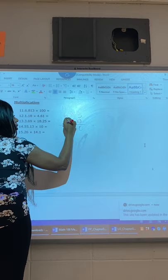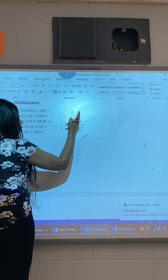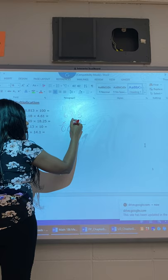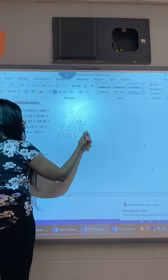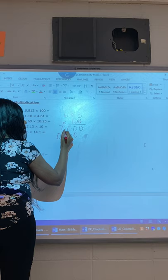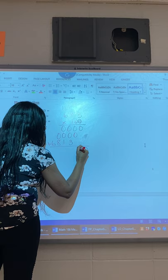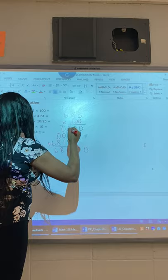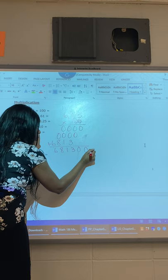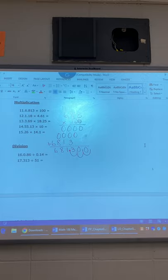Zero times three is zero, zero times one is zero, zero times eight is zero, zero times six is zero. Next I'm in the second column, zero times three is zero, zero times one is zero, zero times eight is zero, and zero times six is zero. This is my third number, so third column here. One times three is three, one times one is one, one times eight is eight, one times six is six. Bring down my zeros. Now I need you to help me count the decimals. One, two, three, so the answer is 681 and 3 tenths. You can drop the zeros if they're on the end.